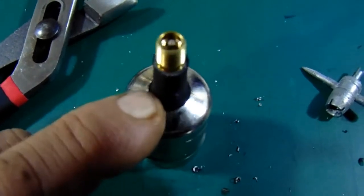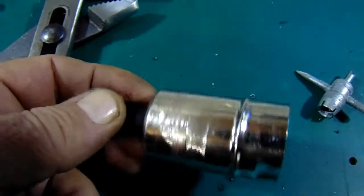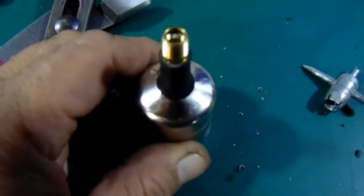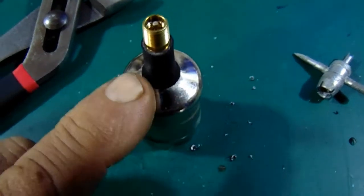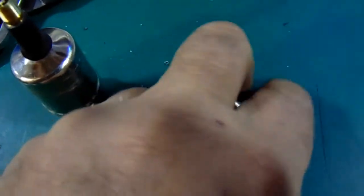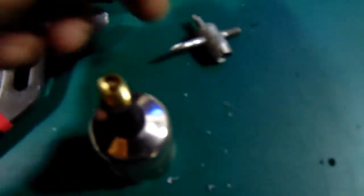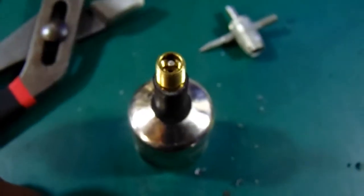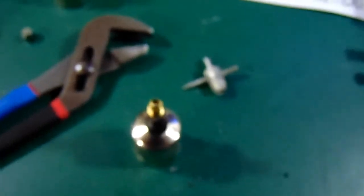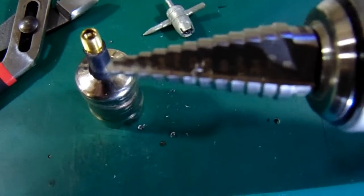I put what's called a Schrader valve, a tire valve, into it. After I drilled the hole with the drill bit, it was just a little too small. I had this valve stem puller on top and I tried to pull it but it was just a little bit too tight. So what I did is I took a step type drill bit and drilled it a little bit more, and then I was able to pull this through.